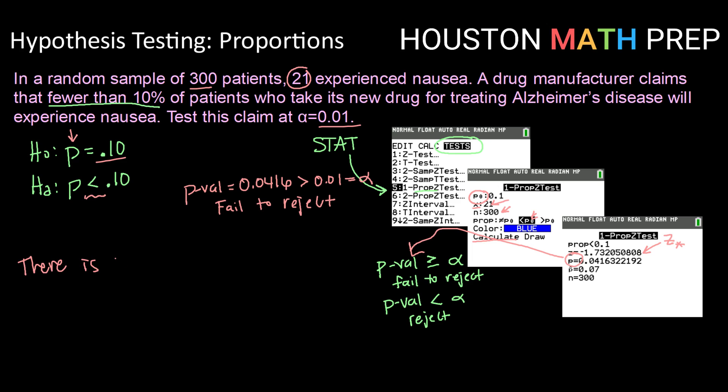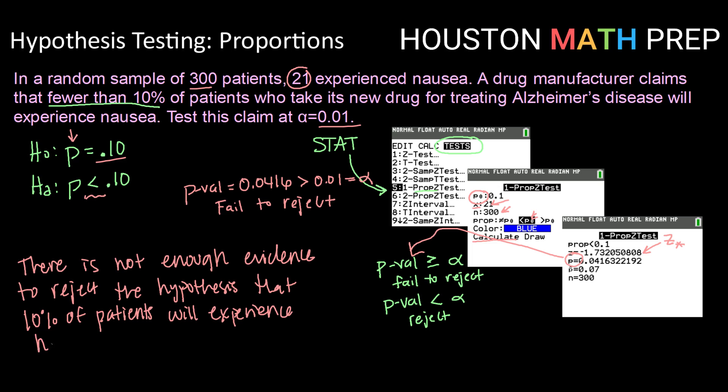There is not enough evidence to reject the hypothesis that 10% of patients will experience nausea. So here, there is not enough evidence to reject that the true proportion of patients experiencing nausea is around 10%. So we can't really substantiate the drug company's claim that fewer than 10% will experience nausea taking their medication.